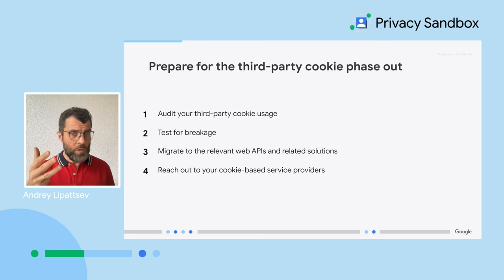Now verify if cookie deprecation affects your site or service. We have a detailed video on this at gu.gl/3pcd-test. In a nutshell: test your site side-by-side with and without cross-site cookies, and run through common scenarios — account creation, login, checkout, interacting with various embeds, and so on. If you find breakage on your site, or on any other site you might be browsing, especially if the breakage is not something you can fix by yourself, please report it via the provided link so we at Chrome can take a look and figure out how to deal with that.